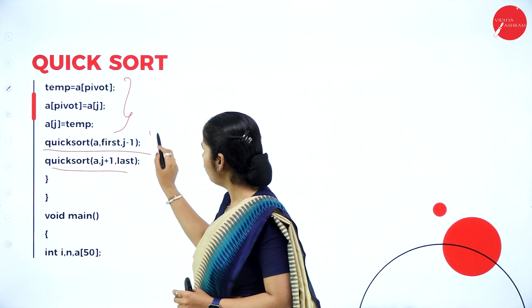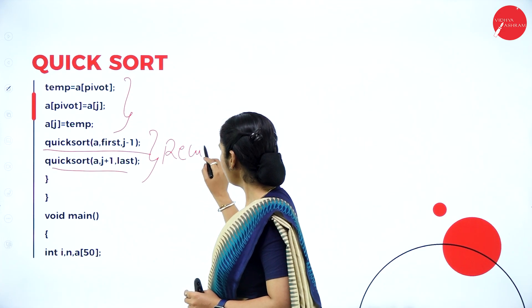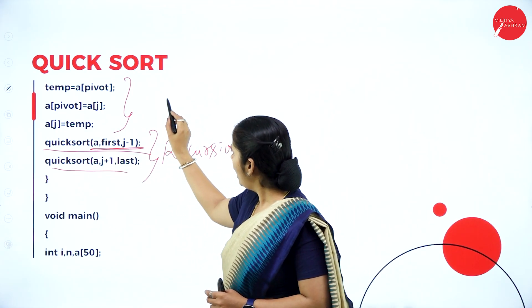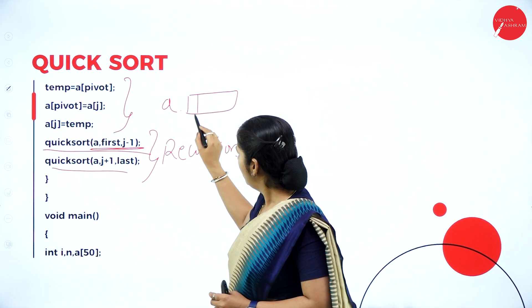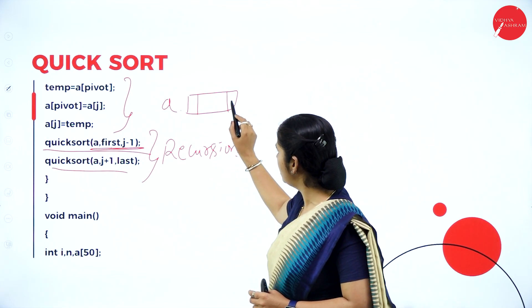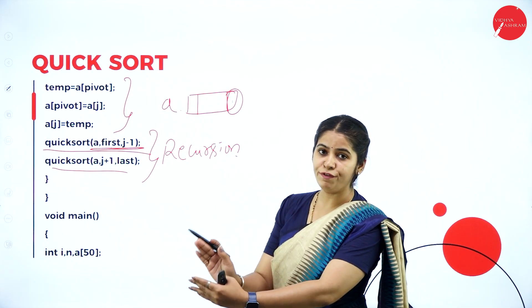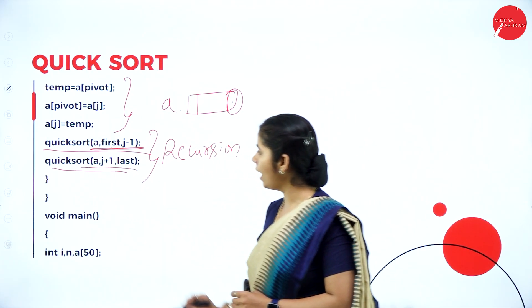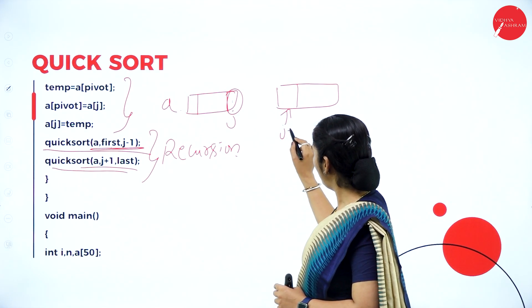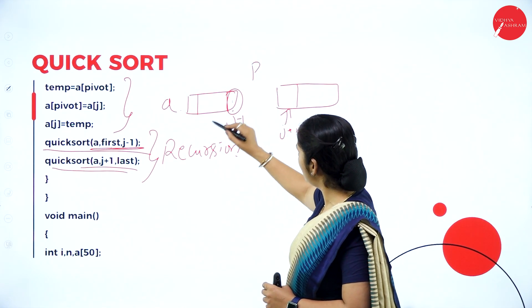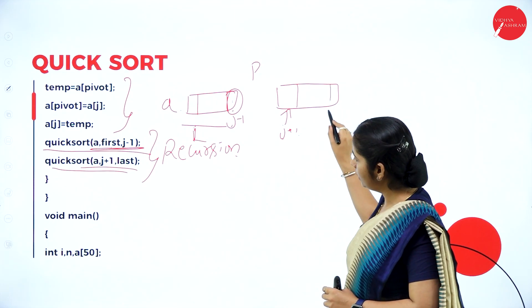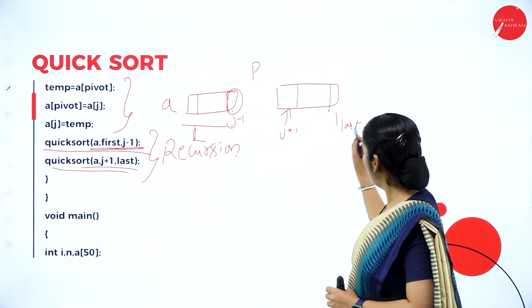Then we use recursion. We apply recursion on the left part of the array: from first to j minus 1. And for the right half of the array: from j plus 1 to last. So we are applying quick sort recursively for the left half as well as the right half of the array.